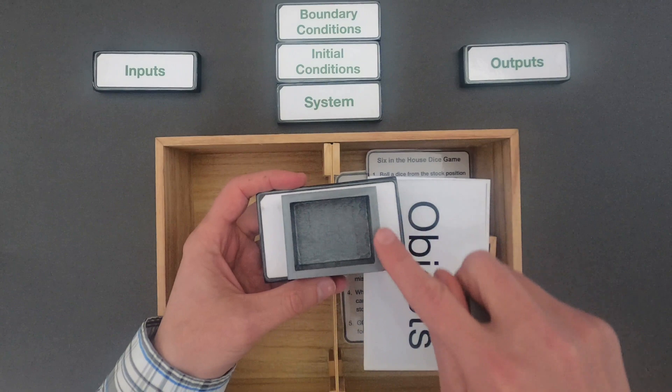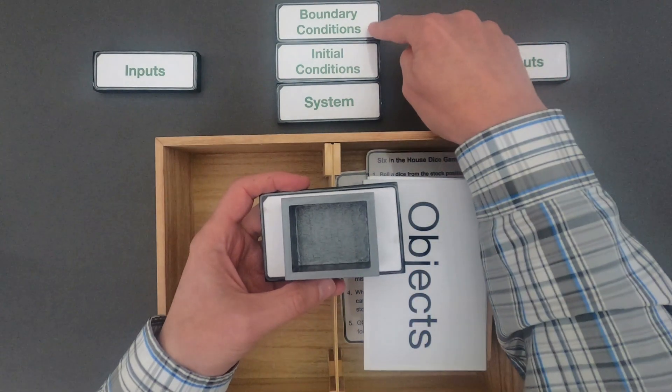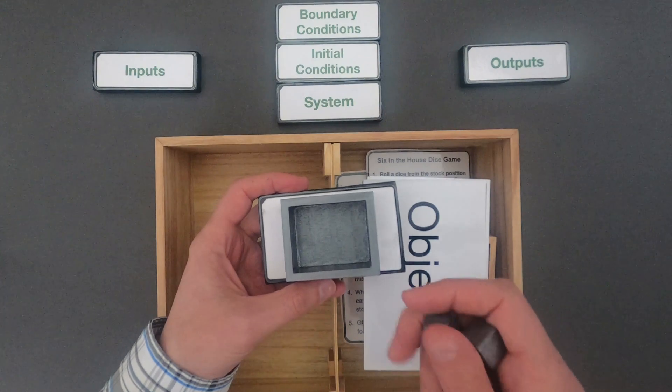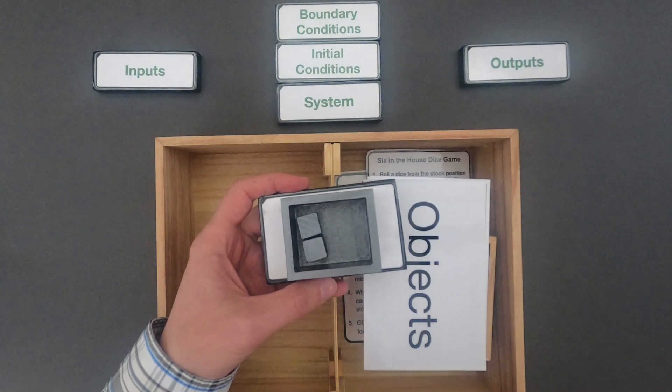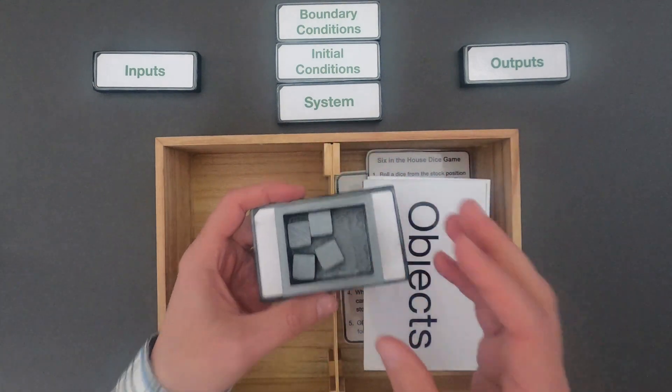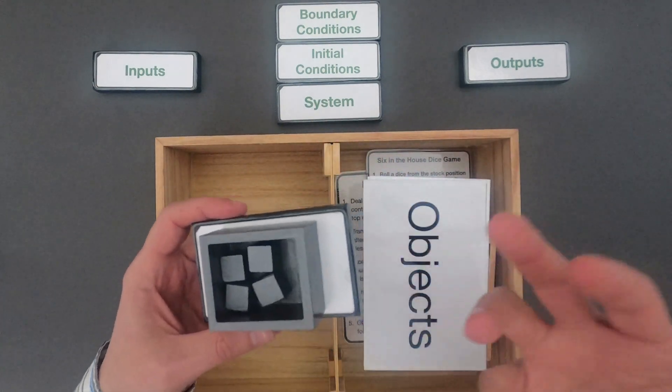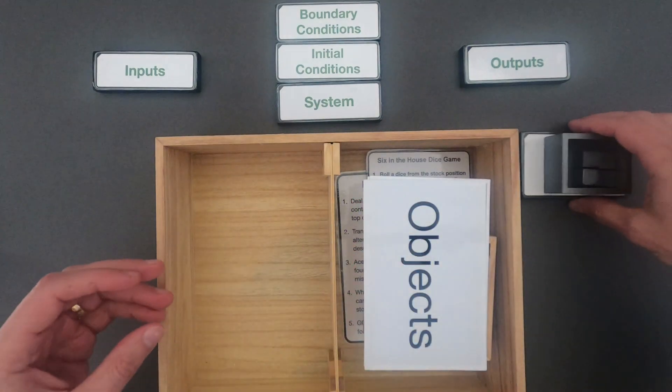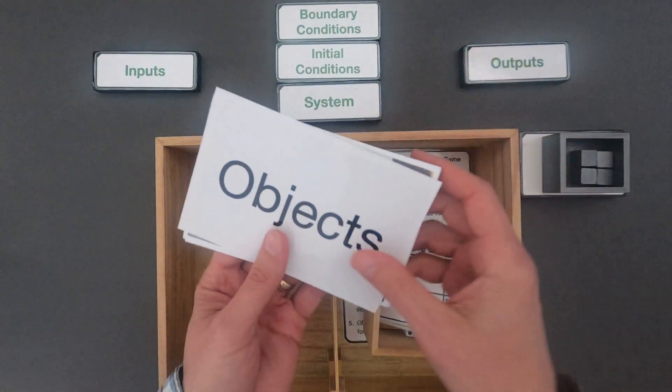And so the boundary of this is the boundary conditions. Is it an open system? Is it a closed system? And then the initial conditions are what's in the system to start. What's outside the system? What can flow into the system? So we really are adding this idea of time to inputs, processes, and outputs. After you watch this video,